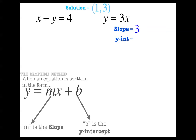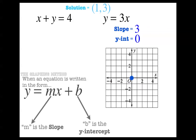The y-intercept of y equals 3x would be 0, since there is no b value. Now we can use that information to graph this equation. We're going to start at 0 because that's where the y-intercept is, and we're going to count our slope — 3 over 1, because 3 equals 3 over 1. Remember how easy it is to graph a line once you know the slope and the intercept!